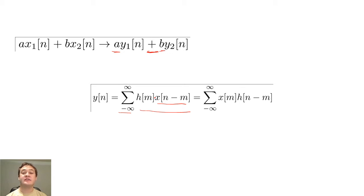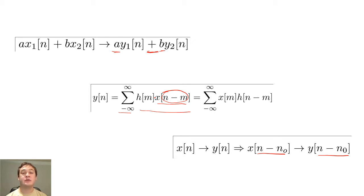The shift invariance property tells us that a shift in the input causes a corresponding shift in the output. If a system was not shift invariant, the shifting of the input in the convolution sum would cause erratic shifts in the output, and the convolution sum would not work.